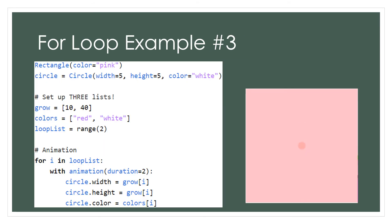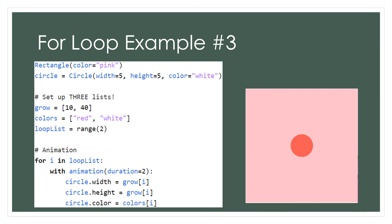Okay, here's what I did to accomplish this task. Note that your code can look different while still doing the same thing. I made two different lists: grow and colors. Grow contained the last two sizes, 10 and 40. Colors contained the last two colors, red and white. In my loop, I looped over 0 and 1, the two indices for my two lists, since they both contain two elements.